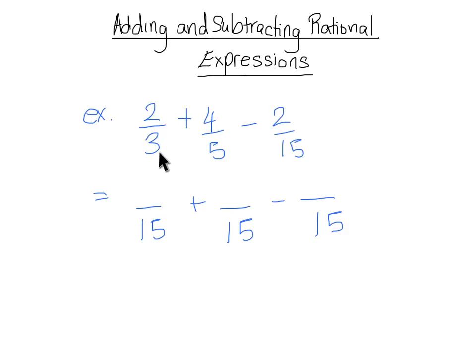What do we have to multiply 3 by to get to 15? We have to multiply it by 5. Whatever we do to the bottom of the fraction, we have to do to the top as well. So we multiply the top and bottom of 2 thirds by 5, giving us the equivalent fraction 10 over 15. Similarly, to get 5 to 15, we multiply by 3, giving us 12 over 15, which is the same as 4 fifths.